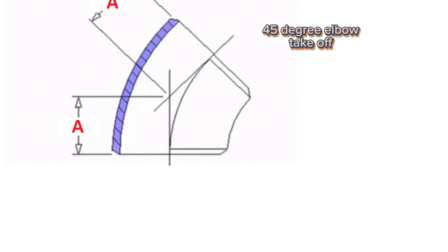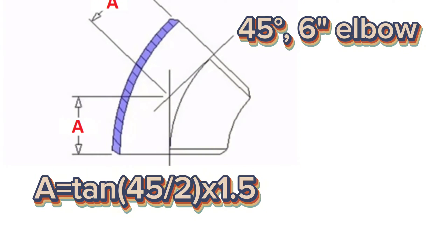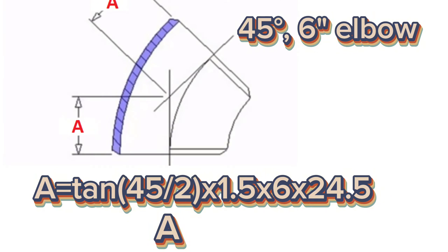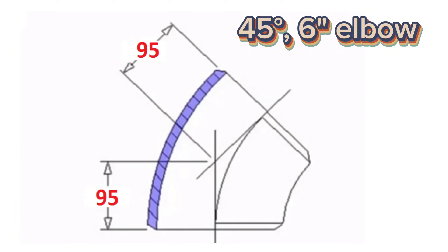We can calculate center of 45 degree 6 inch elbow with help of scientific calculator. A equals tangent 45 divided 2 multiply 1.5 multiply 6 inches multiply 25.4 millimeters. A equals 95 millimeters. We calculated and found that 6 inch 45 degree elbow center to end dimension is 95 millimeters.